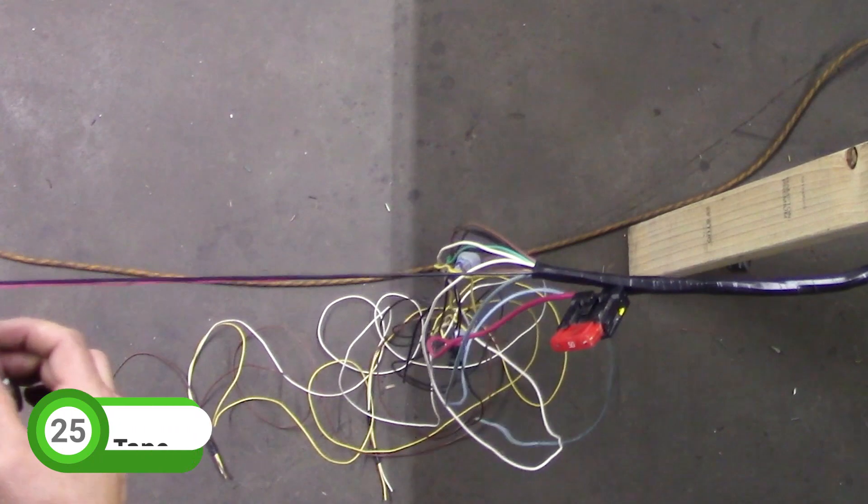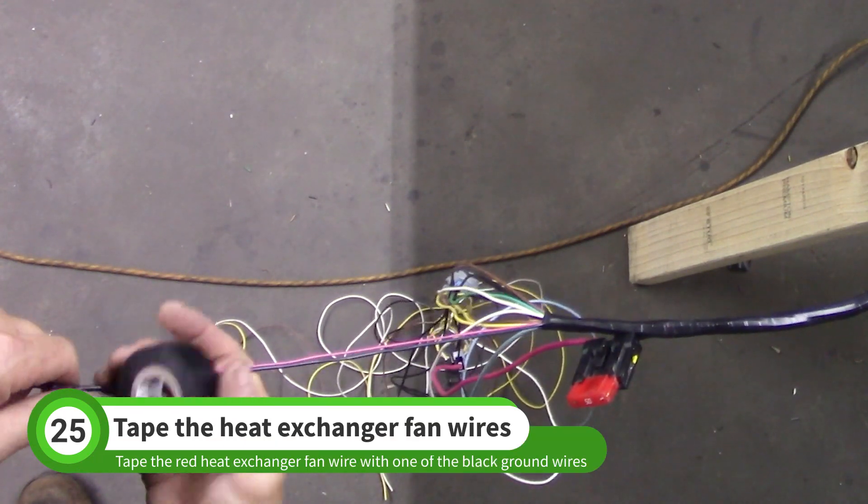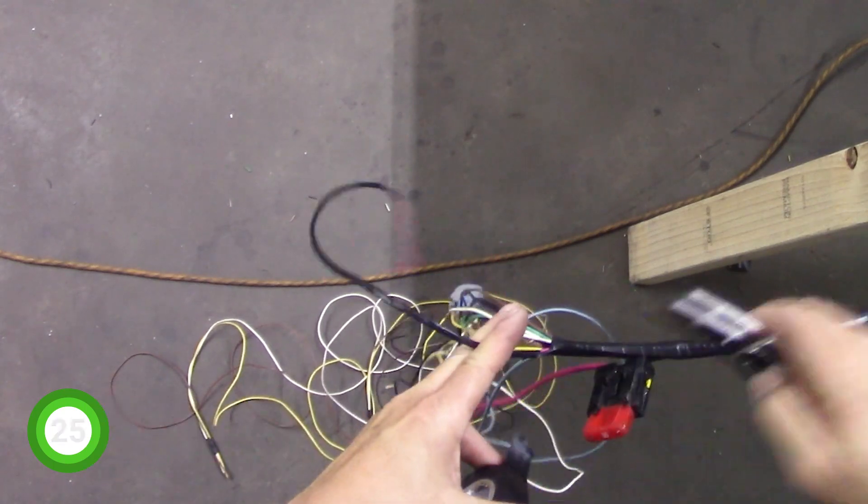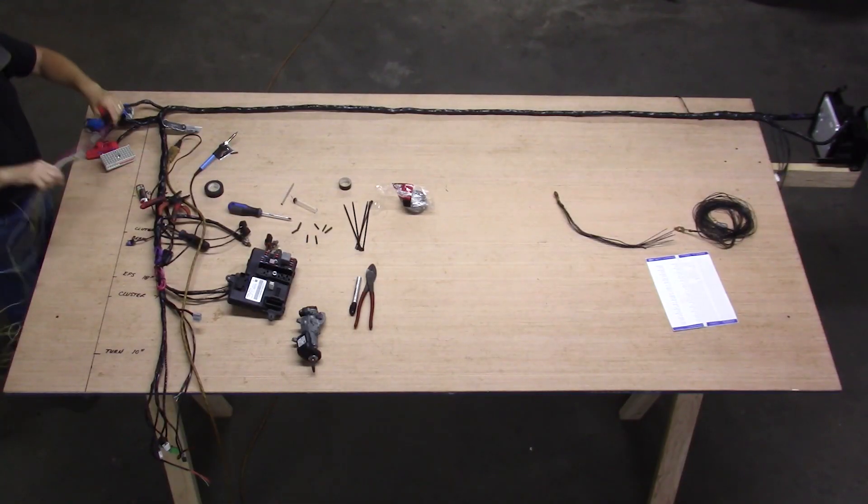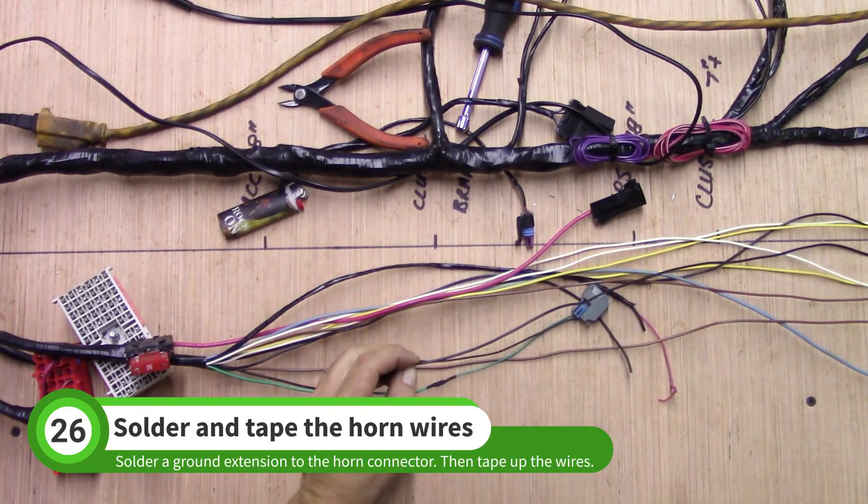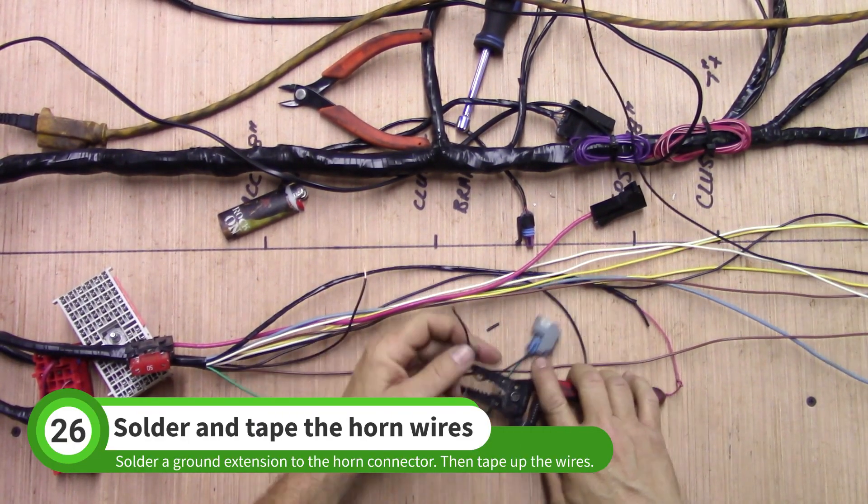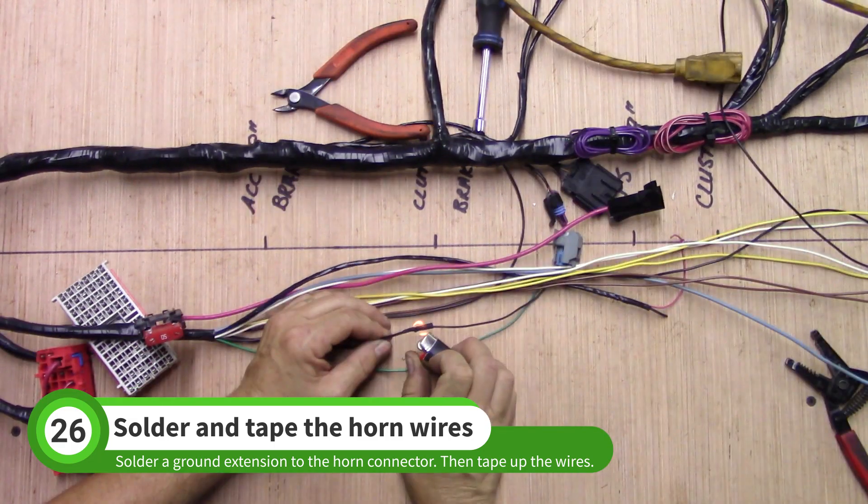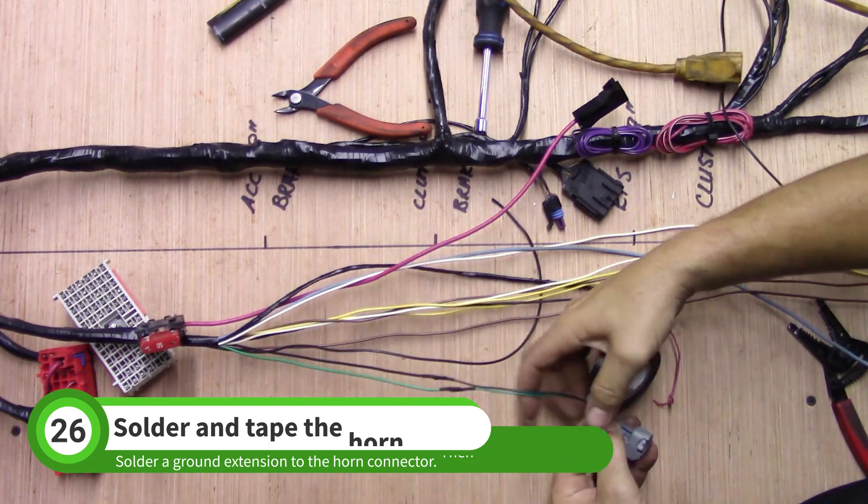Tape up the heat exchanger fan wire with one of the black ground wires. Solder another one of the ground wires to the black horn wire. Tape up the horn wires.